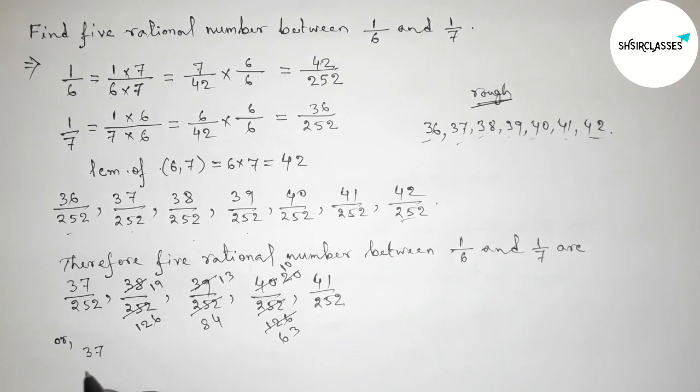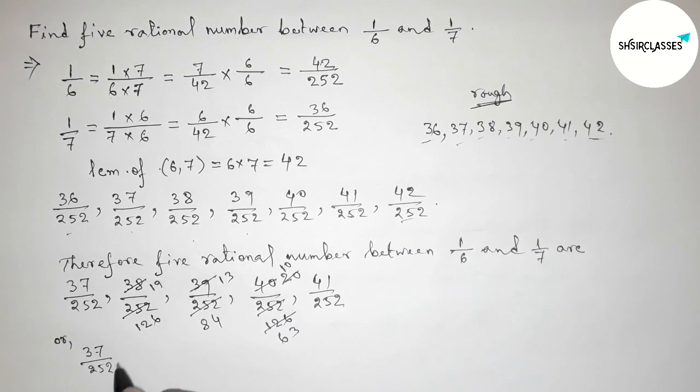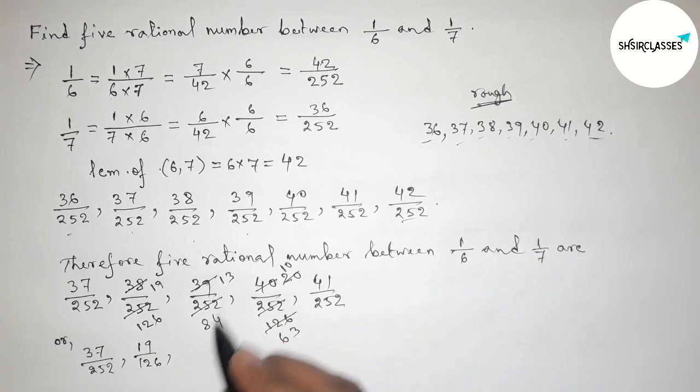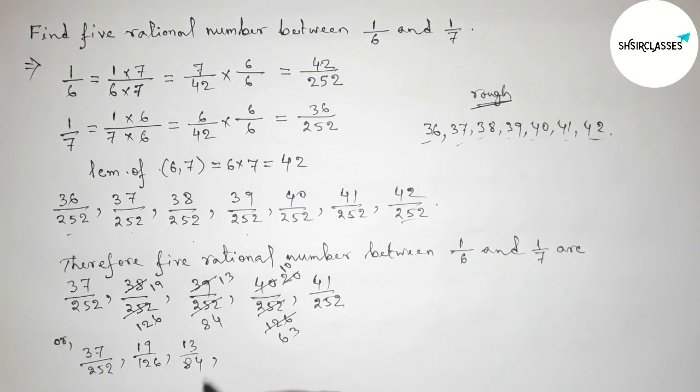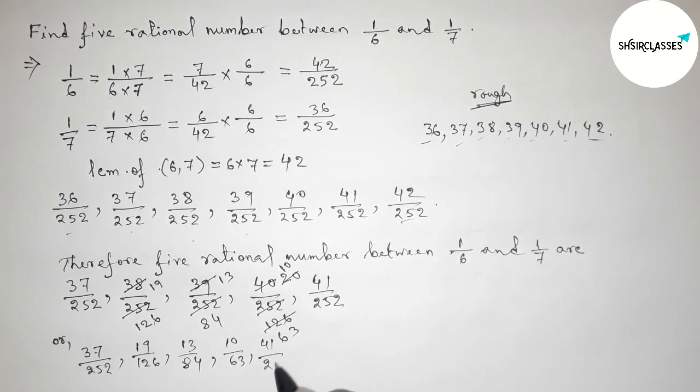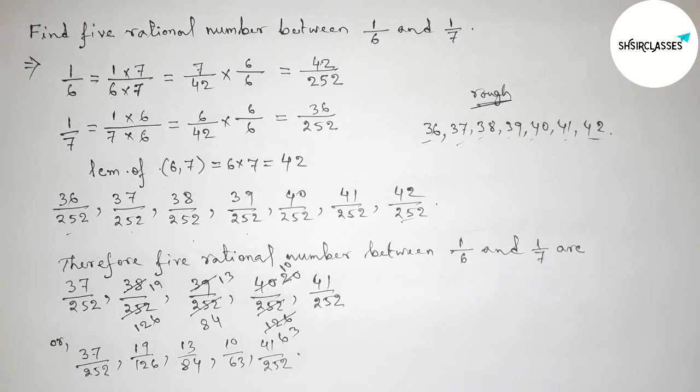Therefore, the five rational numbers between 1/6 and 1/7 are: 37/252, 19/126, 13/84, 10/63, and 41/252. That's all, thanks for watching.